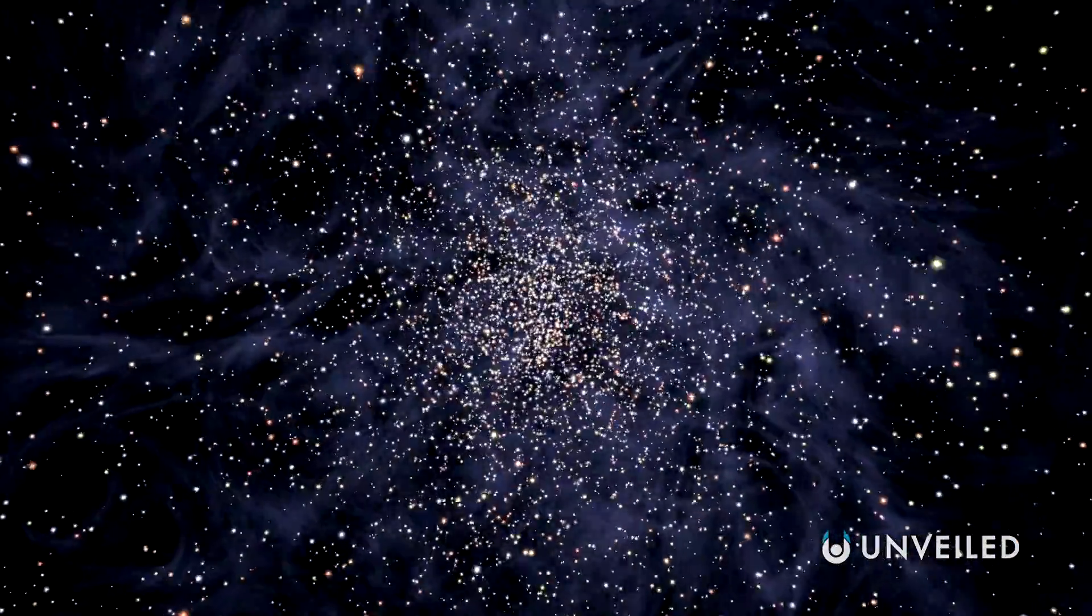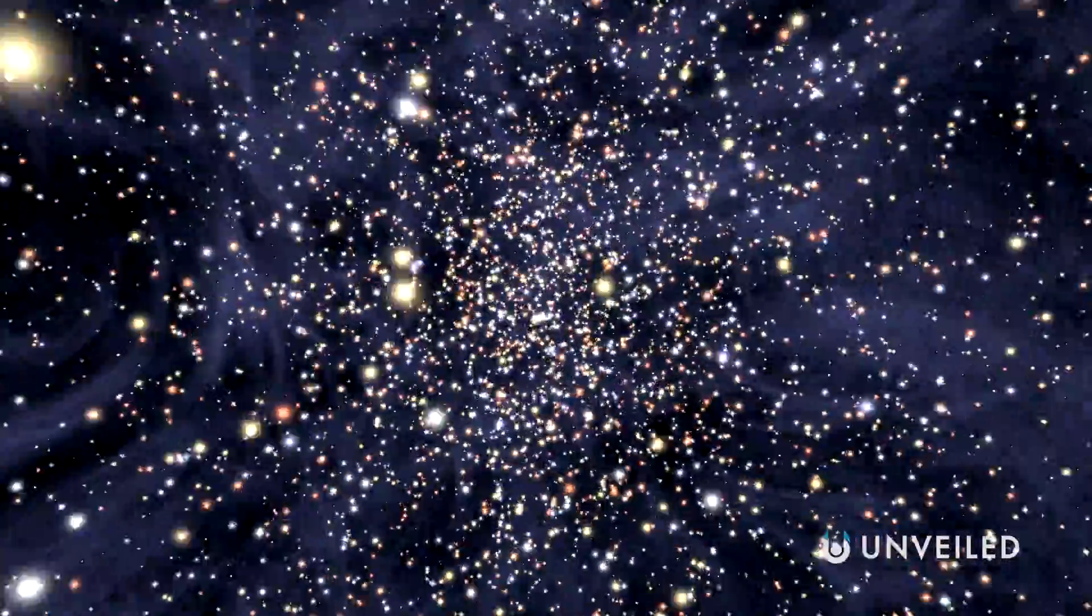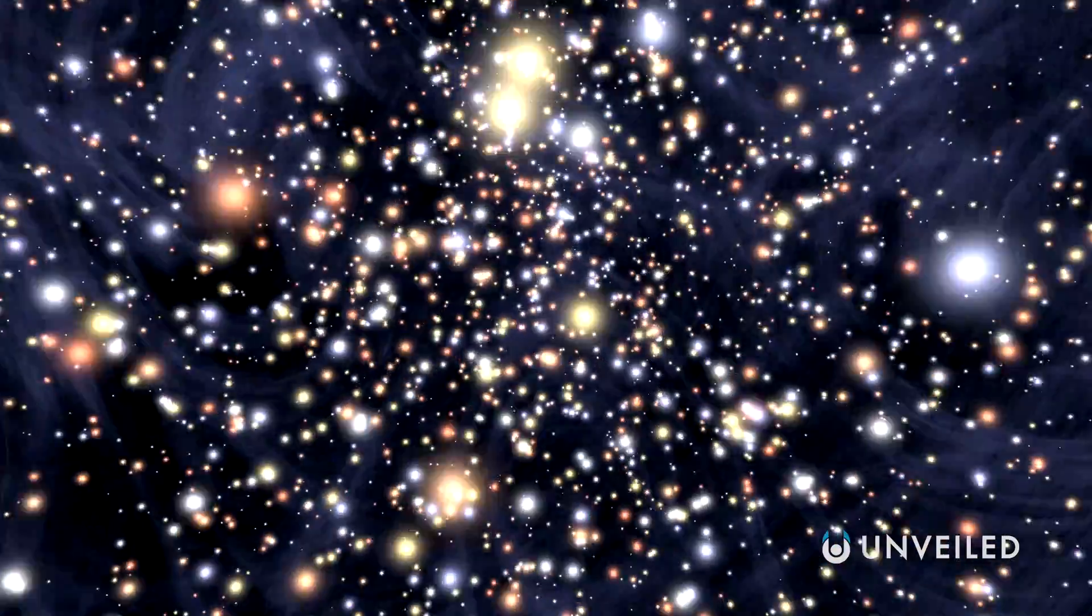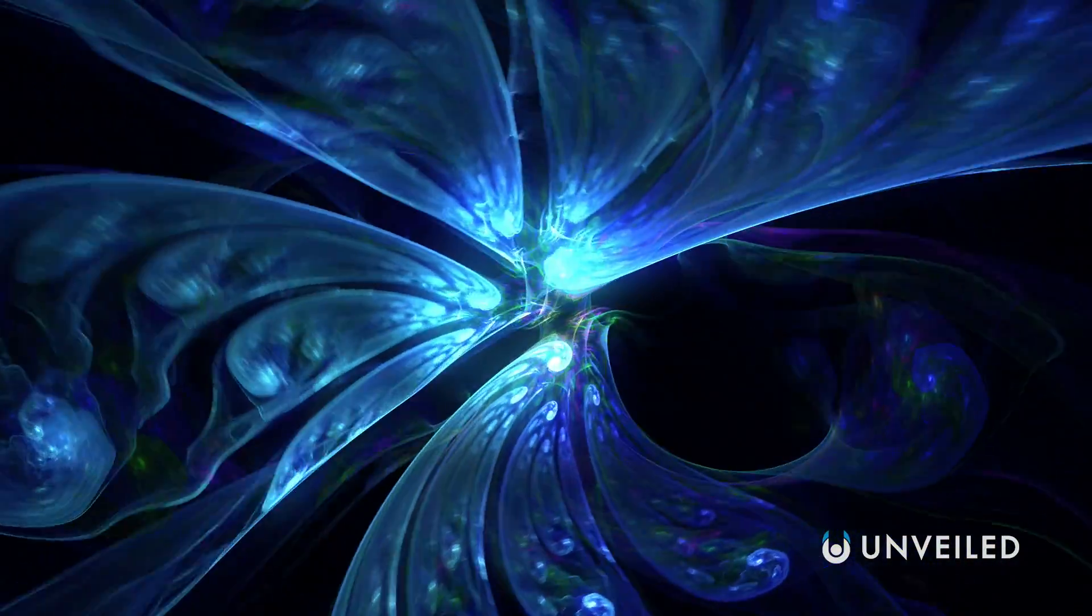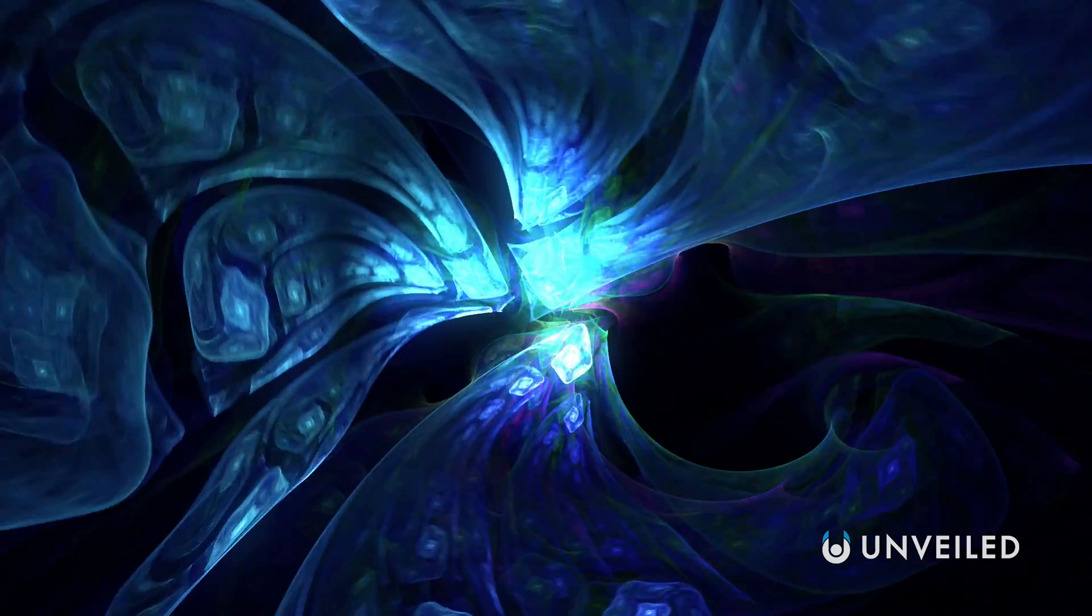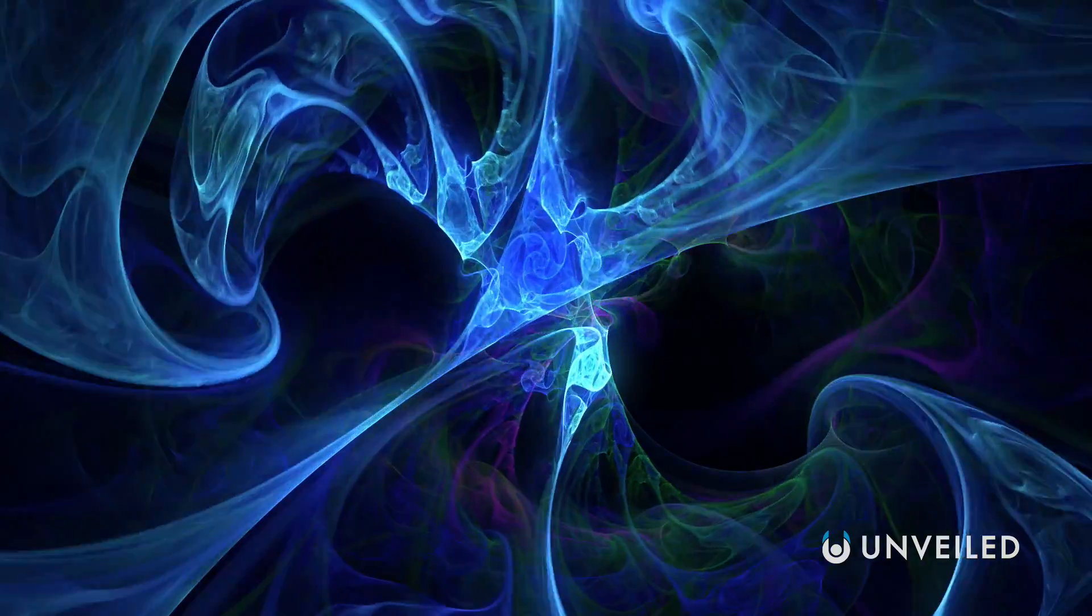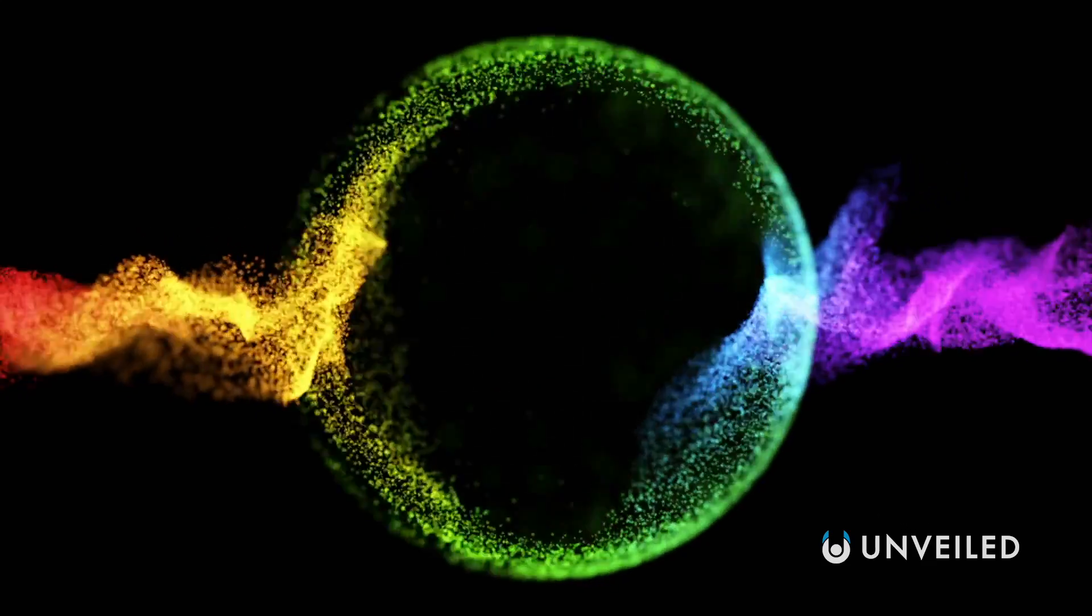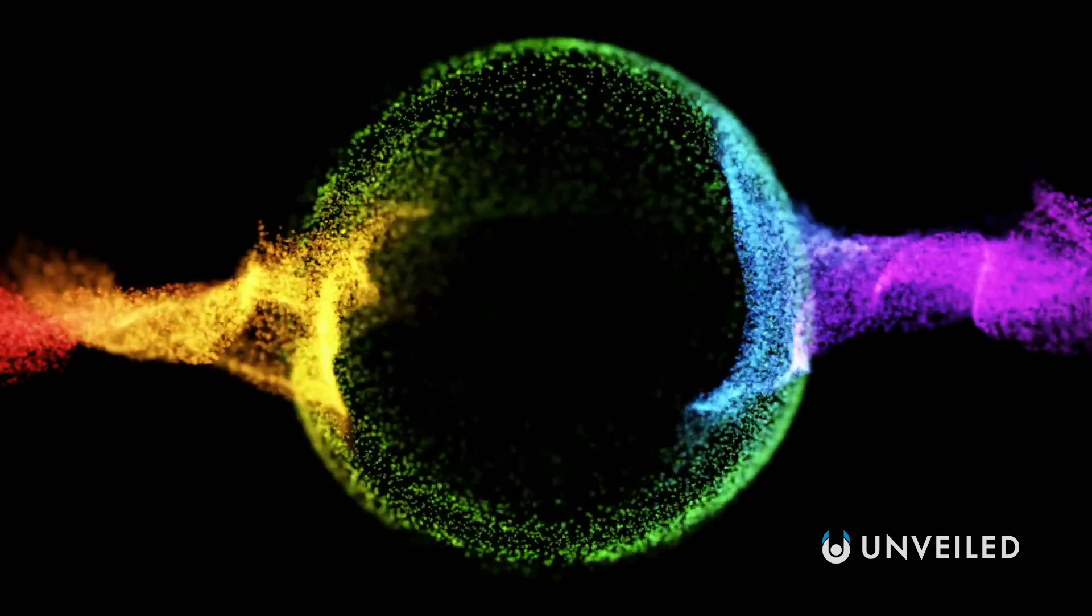If the density of the universe is greater than the critical density, then the universe will eventually stop expanding. This would make our universe a closed one, and it would take on the shape of a four-dimensional sphere. In this case, the universe is finite and has no discernible edge, but it also means that any light will eventually end up where it started after it travels around the universe.